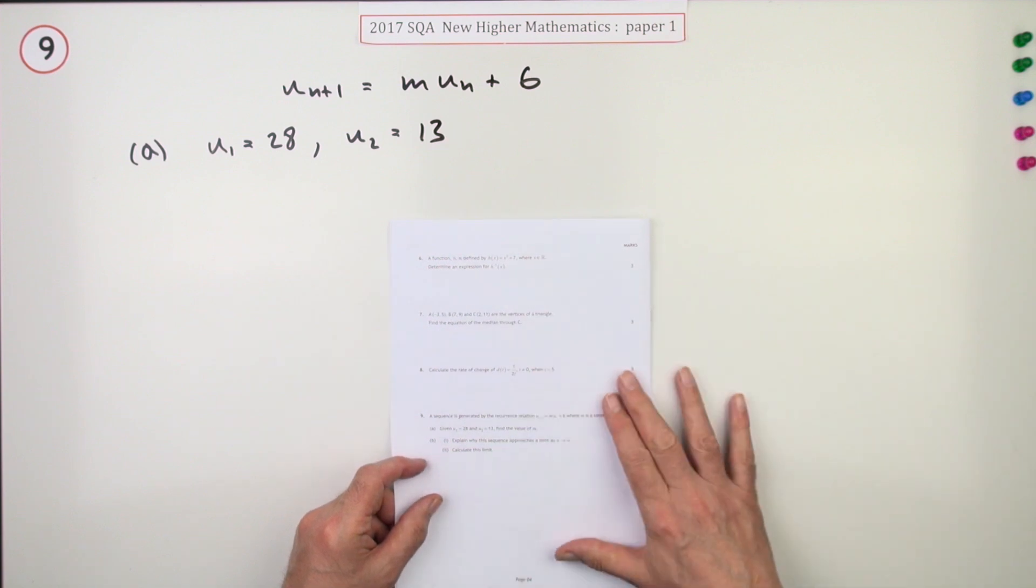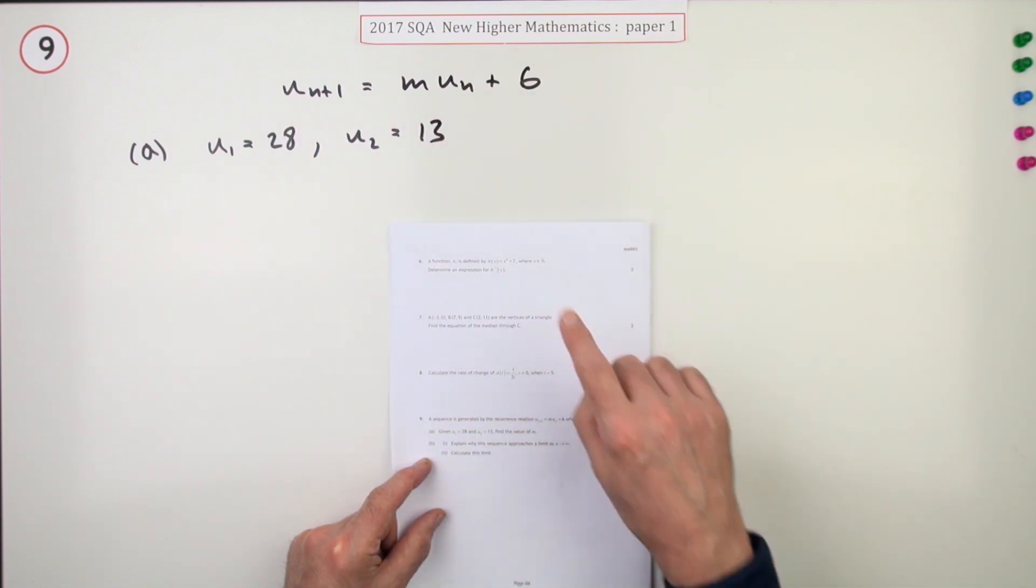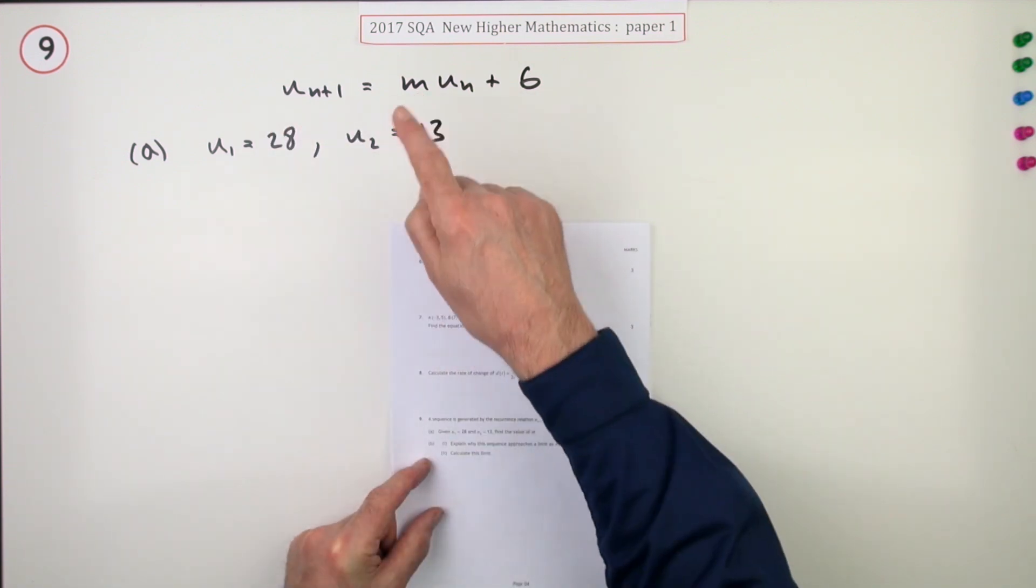Number 9 from paper 1 of the 2017 New Higher Maths. It's a 5 mark question on recurrence relations. A sequence is generated by this recurrence relation, there's an unknown coefficient here, m.